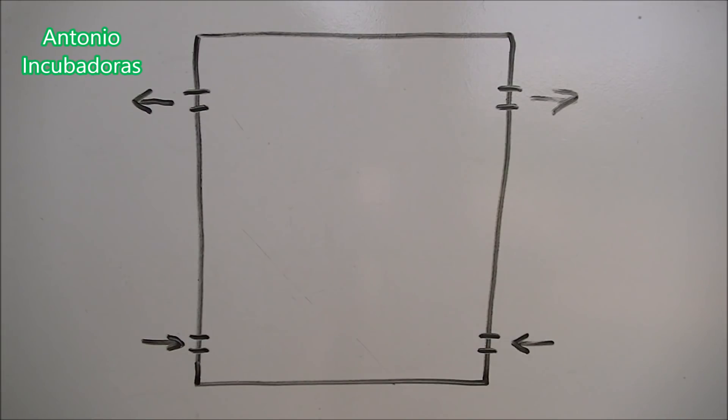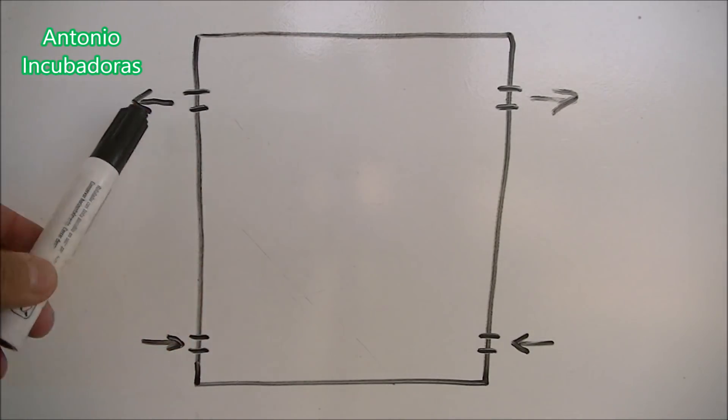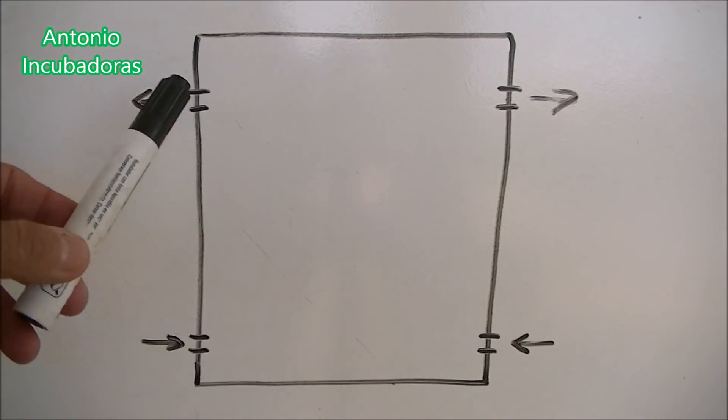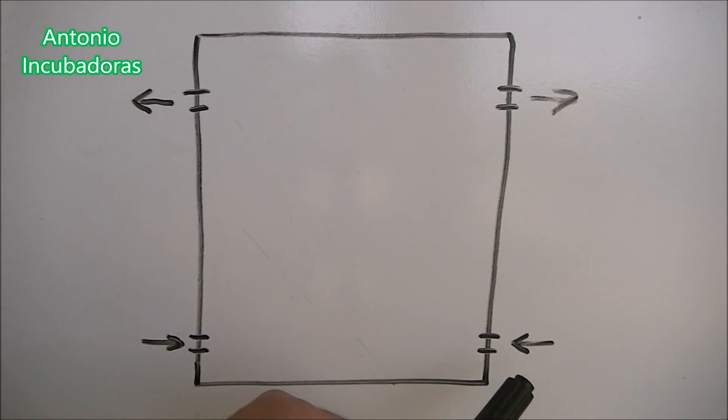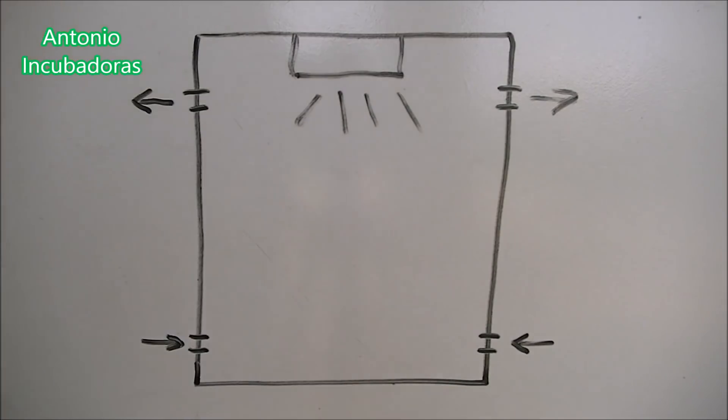Look at this drawing and let's see if we can explain what we want to comment on today. This is a possible mistake that many of you commit when making your incubator. In the renovation of the interior of the incubator, normally the system we use is the following: two orifices in the lower part and two orifices in the upper part. As you can see, the cold air enters from below and exits through the upper part.